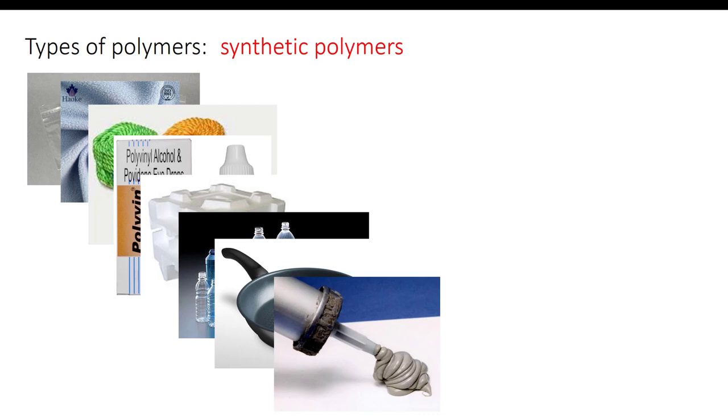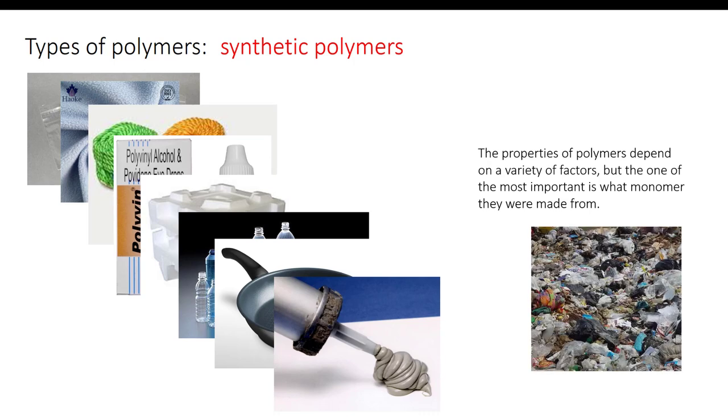Remember, the thing that all these polymers, biological and synthetic, have in common is the fact that they are made up of smaller individual units that have been joined together to make a chain. The chemical and physical properties of the final substance, its strength, rigidity, its water resistance, stickiness, whether it's biodegradable, depend in part on what the original monomers were.